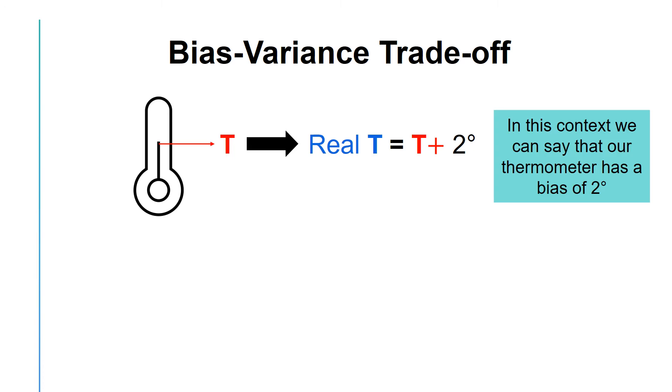Let's say that I have a thermometer at my house that always displays a temperature T that is 2 degrees higher than the real temperature. If the thermometer shows a temperature of 70 degrees, it is actually 68 degrees. In this context, we can say that our thermometer has a bias of plus 2 degrees.